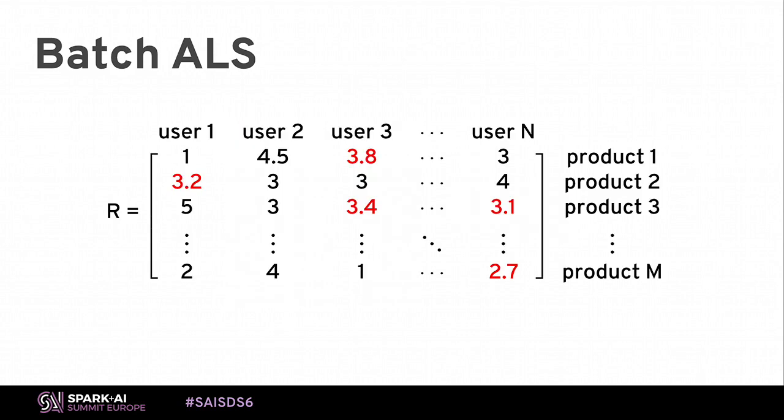Once we do this, we multiply those two factors together and get the approximation. We get the data we have, and for the data we didn't have, we now have an approximation — these values minimize the alternating least squares objective.